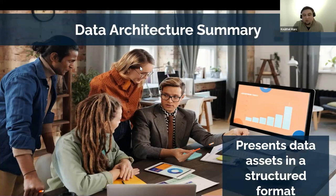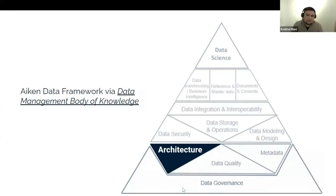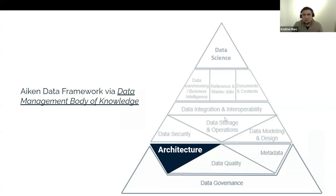We prepared some summary points for the chapter so we can go through that. Please feel free to interrupt and post your question on chat or come off mute. The data architecture chapter four is 6% of the exam. It's an important chapter because it sets the foundation of what Peter Aiken calls his data framework, which the DMBOK body of knowledge has adapted. The foundational chapters at the bottom of the pyramid are the ones you need to be familiar with to pass the exam. We covered data governance earlier in the year, and now we're going into data architecture, data quality, and metadata. I really like this pyramid because it sets a strong message, especially nowadays with data science, AI, and ML happening.